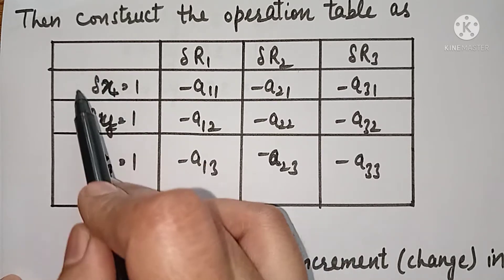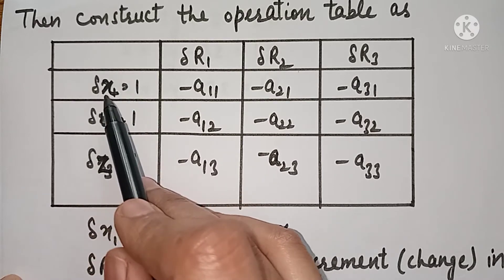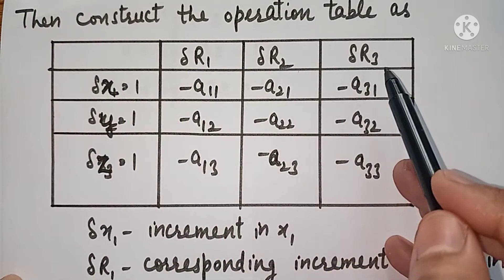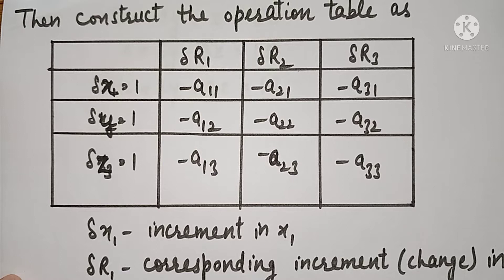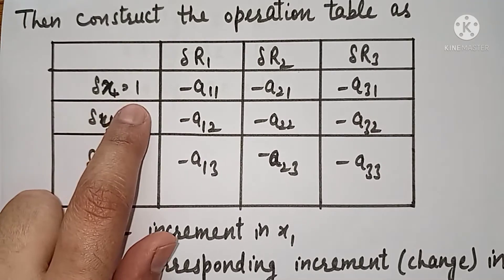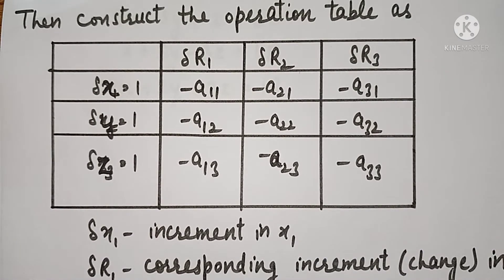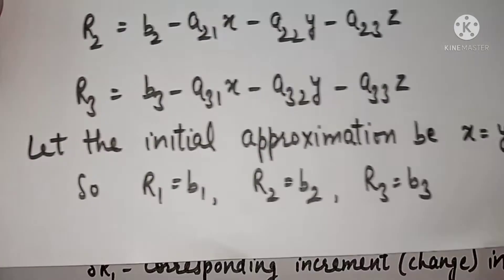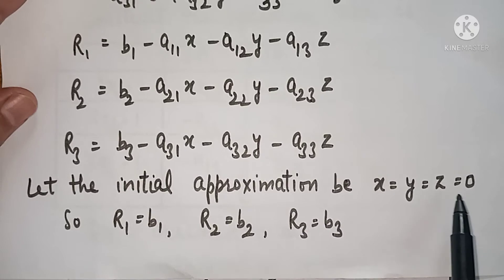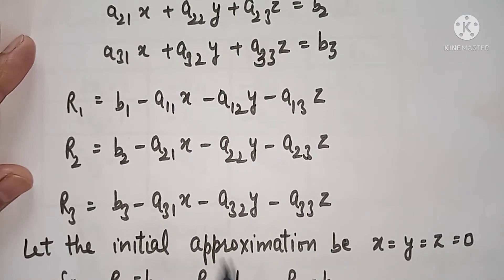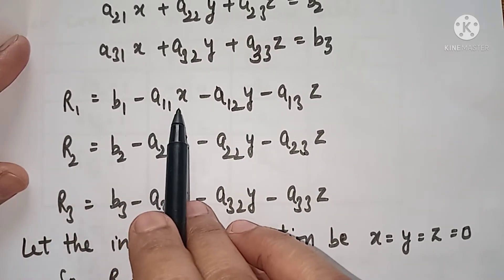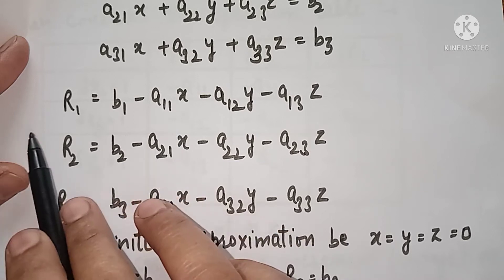और उसके corresponding, जब आप del x में — x में कोई increment करते हैं — तो उसके corresponding जो R1, R2 और R3 में change होता है, वो आपका del R1, del R2 और del R3 को denote करता है। तो जब आप initial approximation लेते हैं और x में 1 का increment करते हैं, तो x 0 से 1 बन जाएगा। इस equation में R1 में क्या change आएगा — अगर x में 1 का change आया है।